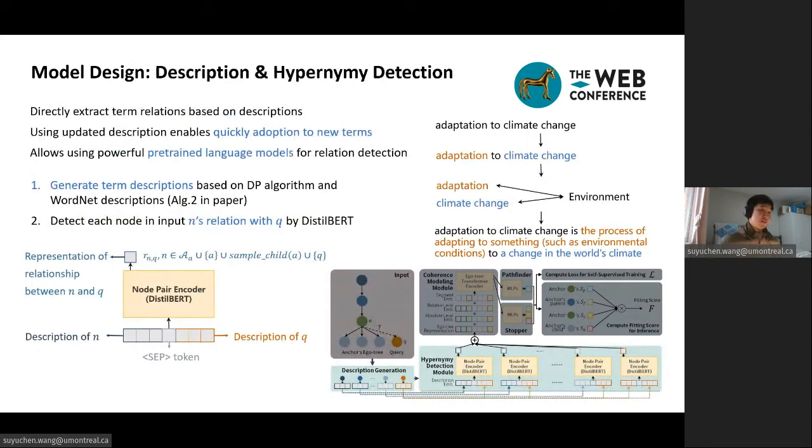Different from previous methods that generate node representation by averaging surface names, the information in the relatively short surface name is not enough. So we designed a simple description generation algorithm to expand term surface names into a description based on WordNet descriptions. The algorithm models the problem as a dynamic programming problem: first split terms into longer noun phrases, then translate each noun phrase by its WordNet description. The full algorithm is given in the paper in algorithm 2.